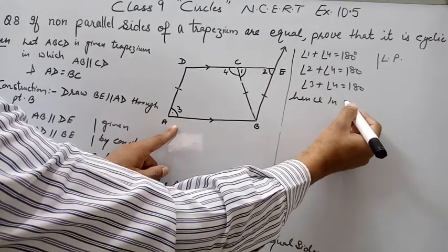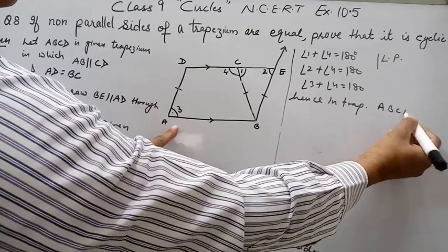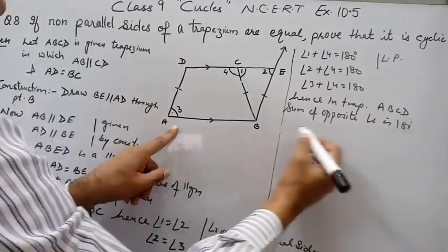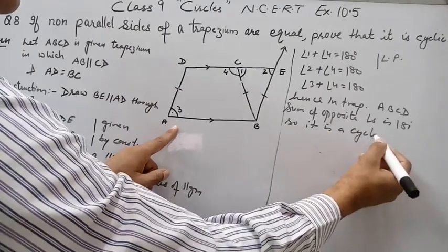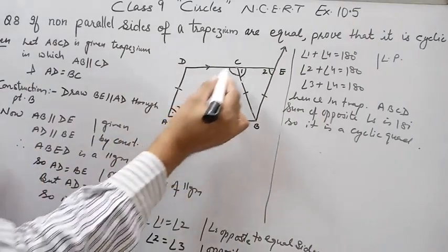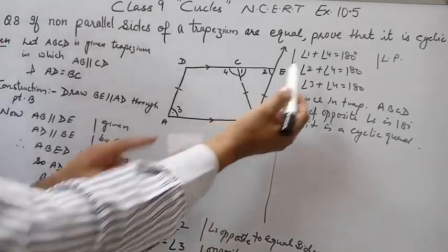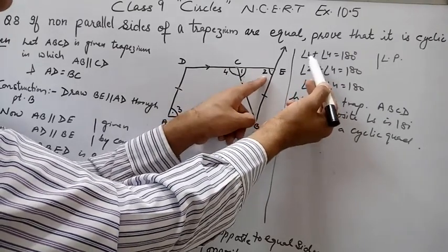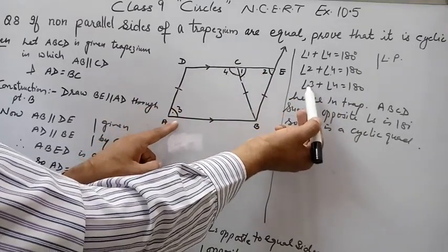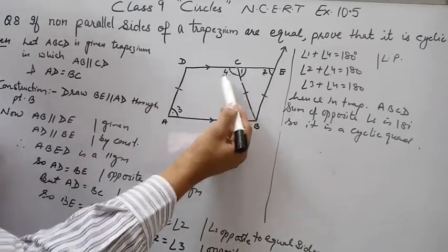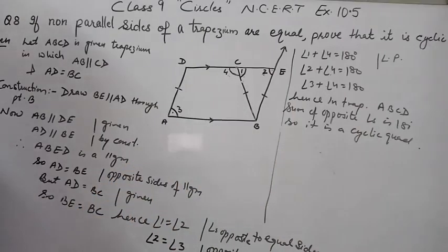Hence in trapezium ABCD, the sum of opposite angles is 180 degrees, so it is a cyclic quadrilateral. We have proved angle 3 plus angle 4 equals 180 degrees, meaning one pair of opposite angles sums to 180 degrees. Therefore the trapezium is a cyclic quadrilateral. Thanks for watching.